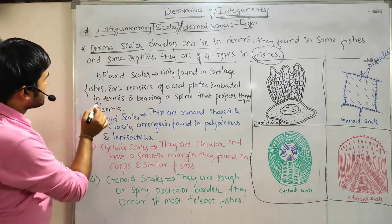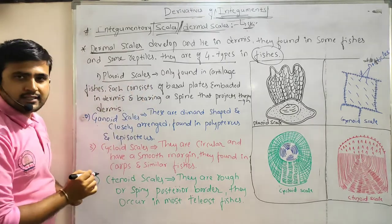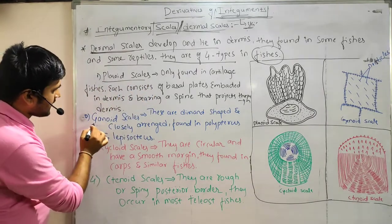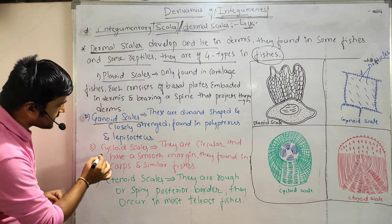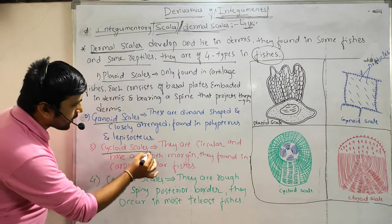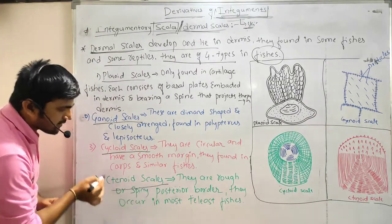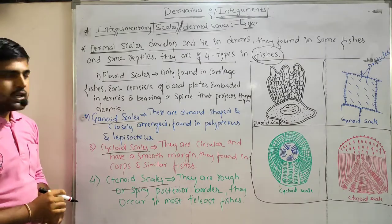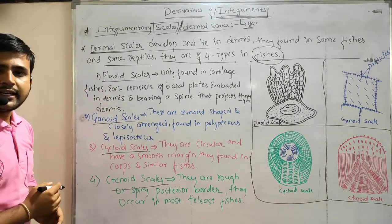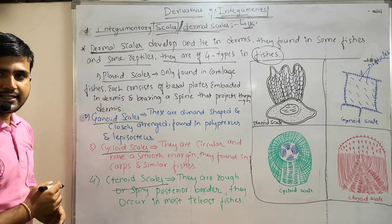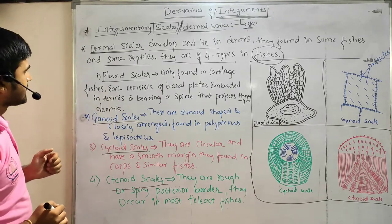The four types of dermal scales in case of fishes are: first, placoid scales; second, ganoid scales; third, cycloid scales; and fourth, ctenoid scales. We will see them one by one.